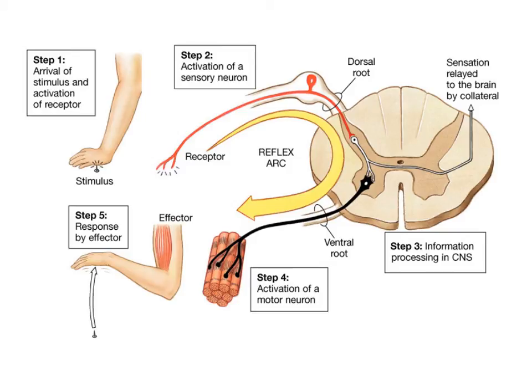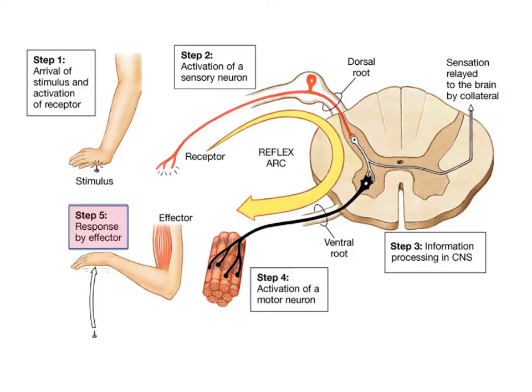A reflex action can simply be described in the following way. A sensory receptor initiates a nerve impulse. The sensory neuron carries the nerve impulse from the sensory receptor to an interneuron. An interneuron carries the nerve impulse from the sensory neuron to a motor neuron. A motor neuron carries the nerve impulse from the interneuron to an effector, and the brain finds out later what happened.